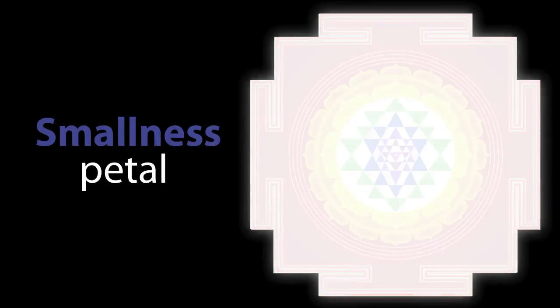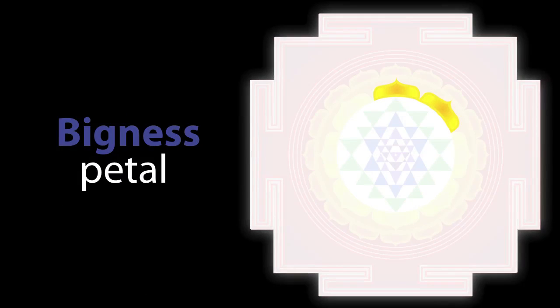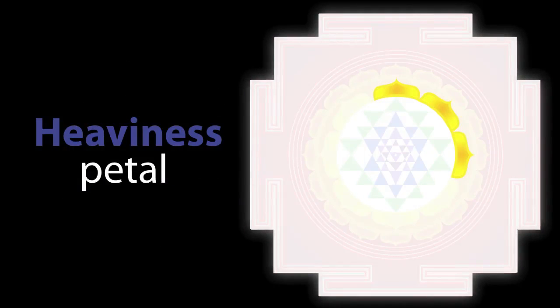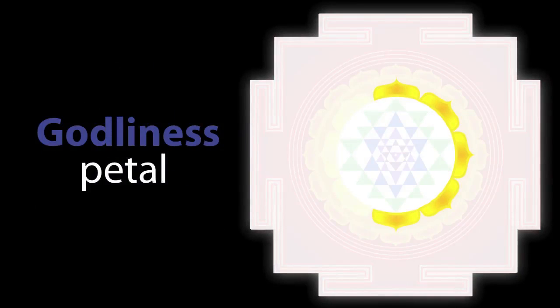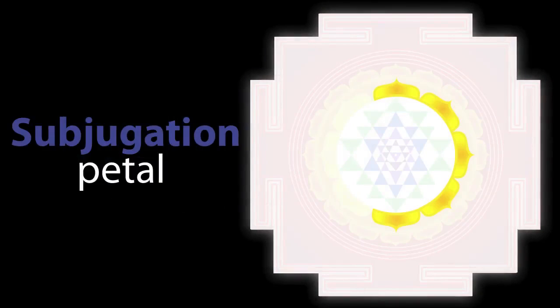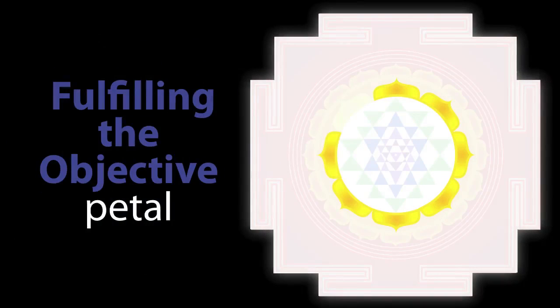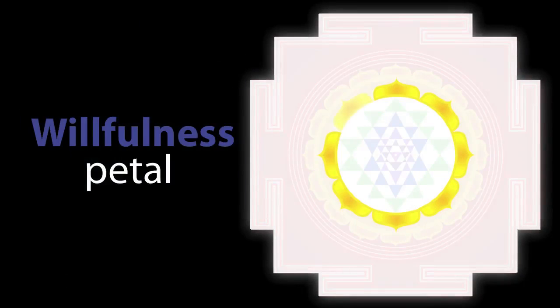These are anima, which means smallness; lagima, which means bigness; garima, which means heaviness; mahima, which means creativity; isattva, which means godliness; vasattva, which means subjugation; prakamya, which means fulfilling the objective; and then there's icha, which is willfulness.